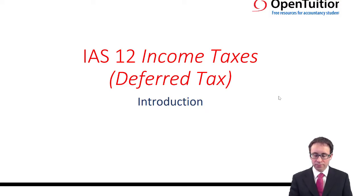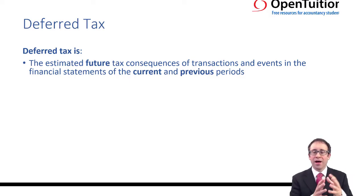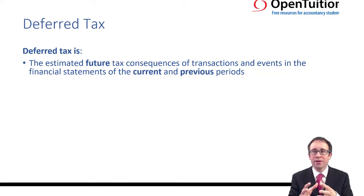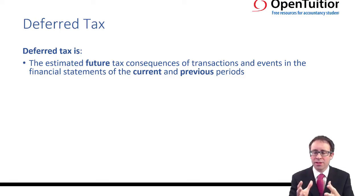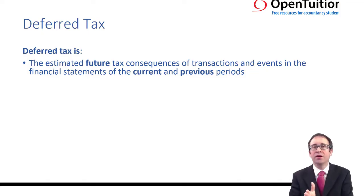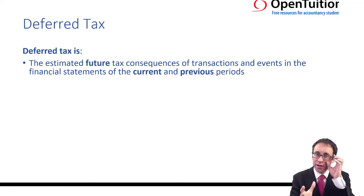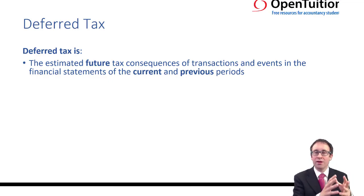Deferred tax is looking into the future and thinking about what's going to happen to our tax charge in the future, based upon something that has happened today. From a tax authority's perspective, they just look at what has happened this year and tax it in the current year — you pay in the next accounting period, but your tax expense is based on this year's activity and this year's tax rates. From an accounting perspective, we want to give consideration to what's happened this year that might impact our tax charge in the future.